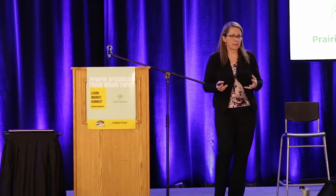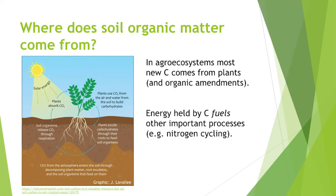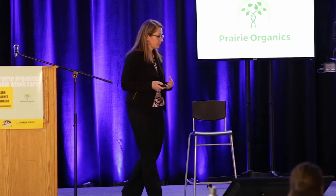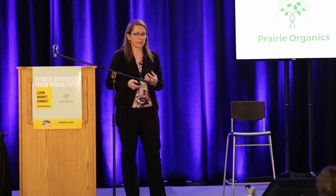Returning to organic matter: where does it come from? In agroecosystems, new carbon comes into the soil from plants and sometimes organic amendments. Plants take energy from the sun and CO2 from the air and fix it through photosynthesis into their tissues, building organic carbon, which most soil microbes use as their food and energy source. The energy held in plant tissues in above- and below-ground biomass is really fueling the whole below-ground system and driving other critical, important processes.